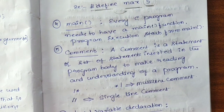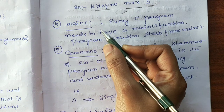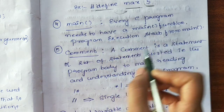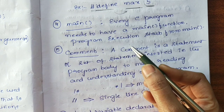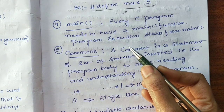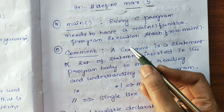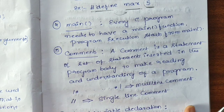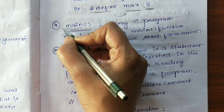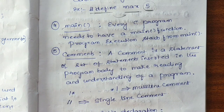The next important component of the structure of a C program is the main function. In every C program, we will have the main function. The purpose of the main function is that program execution of every program starts from the main function — always the program execution starts from main. That's why we require the main function.